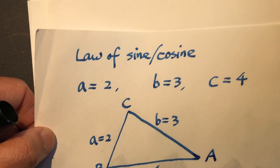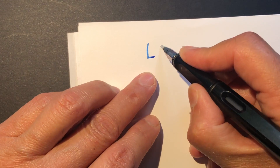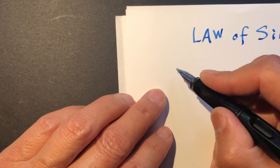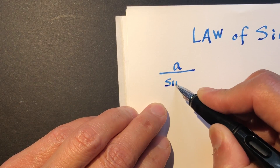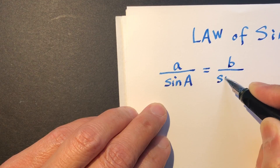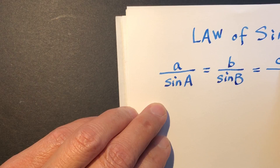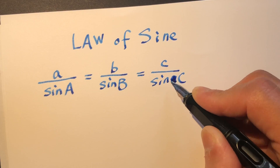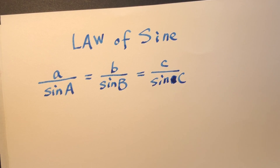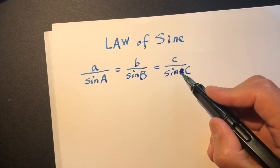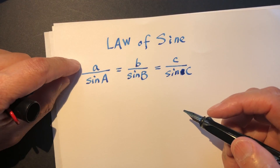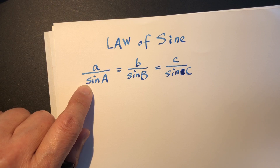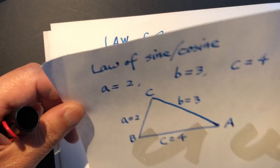Before everything, we need to write down the law of sines. The law of sines — each teacher writes it differently — is: A over sine A equals B over sine B equals C over sine C. So the side over the sine of the opposite angle is all proportional. This is the law of sines.